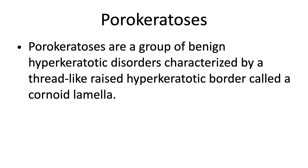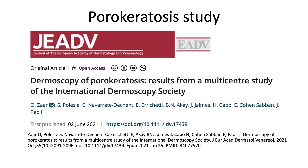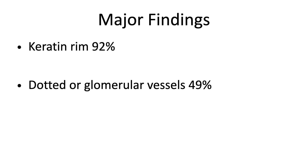Looking at porokeratosis — this is a group of benign hyperkeratotic disorders characterized by a thread-like raised hyperkeratotic border called a cornoid lamella. This multicenter study by the IDS found that there is a keratin rim in 92% of porokeratosis cases, and there are dotted or glomerular vessels visible on the inside of that rim in 49%. Those are the two key findings to remember.